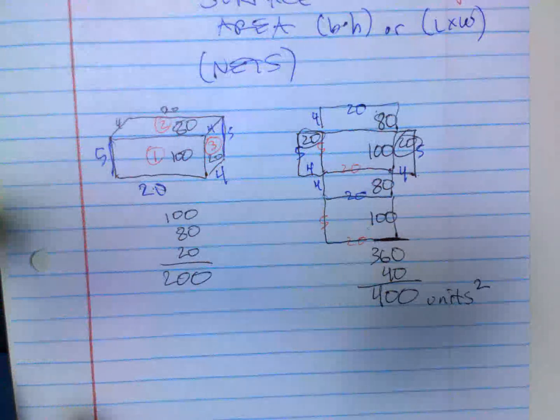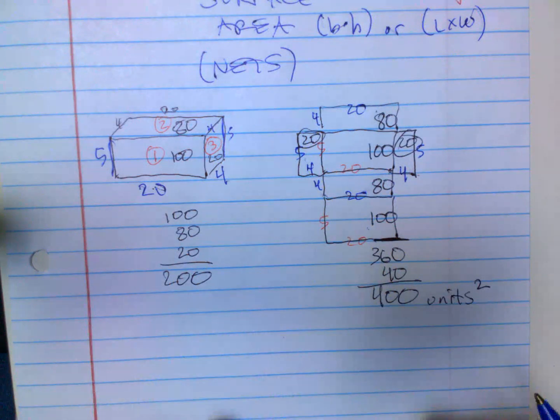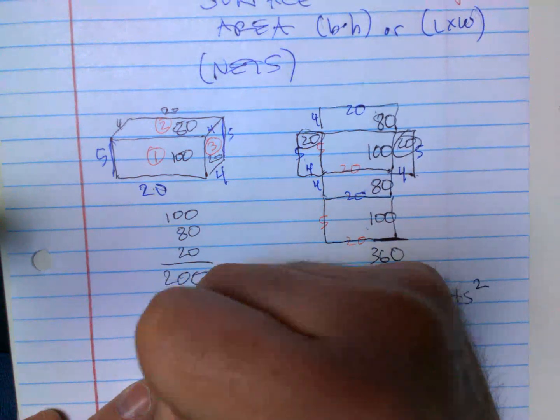Now I only see half the object, so to add on the back, the bottom, and the left, I have to do times 2.